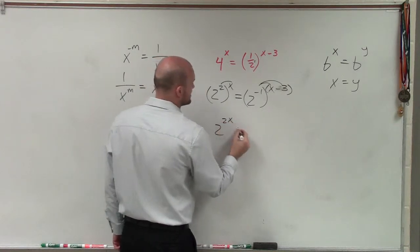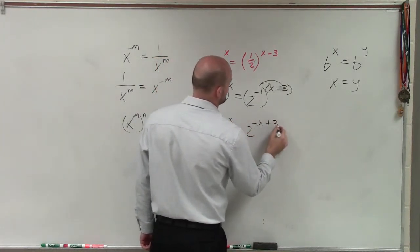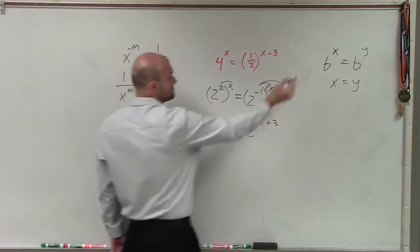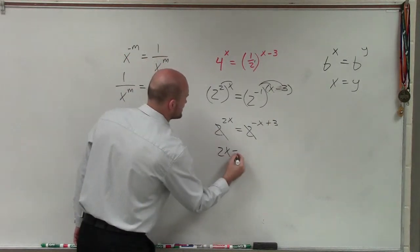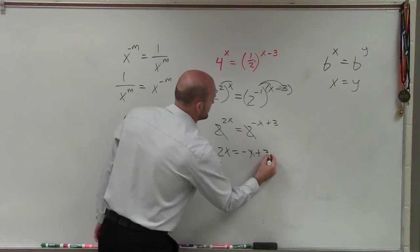So therefore, I have 2 to the 2x equals 2 to the negative x plus 3. Now, I have the same base by using my 1 to 1 properties. I can say 2x is equal to negative x plus 3.